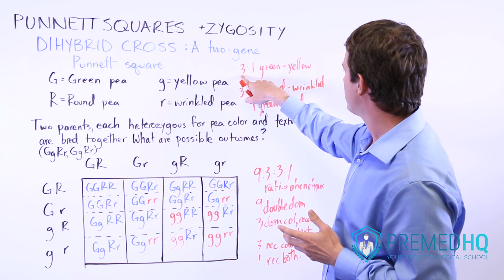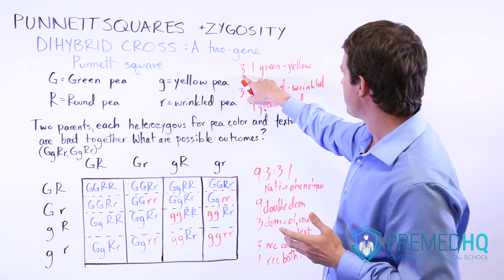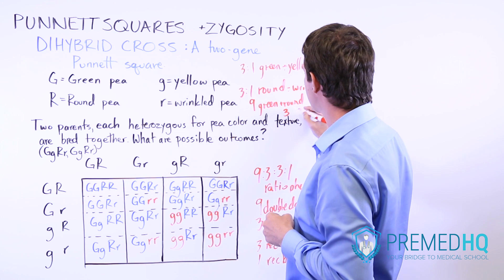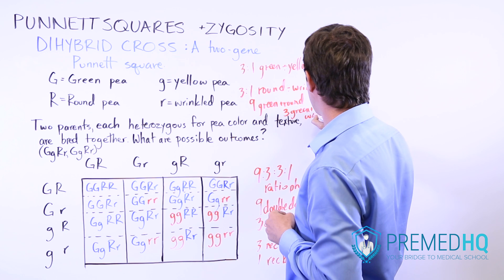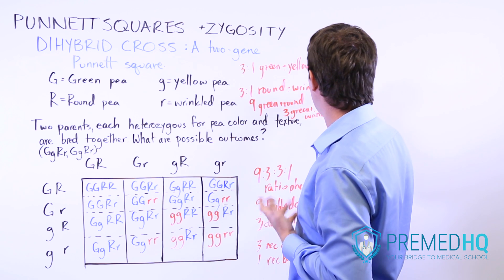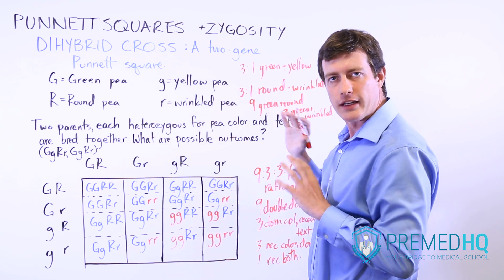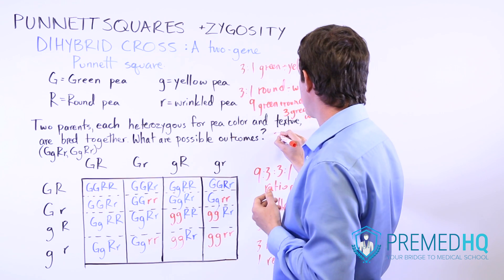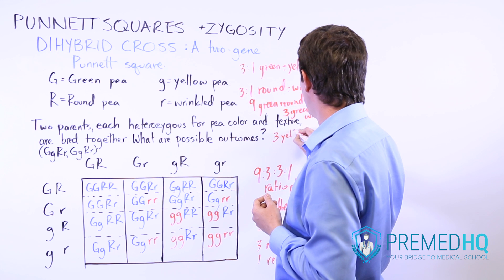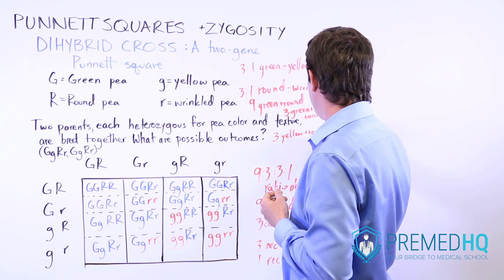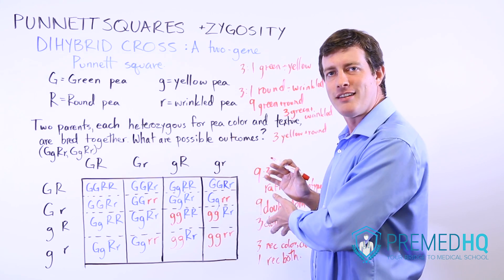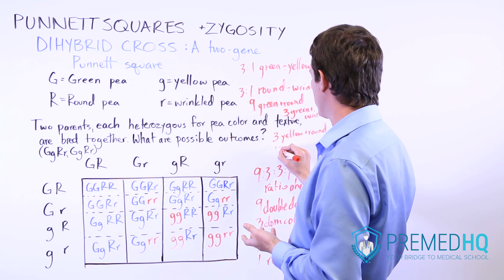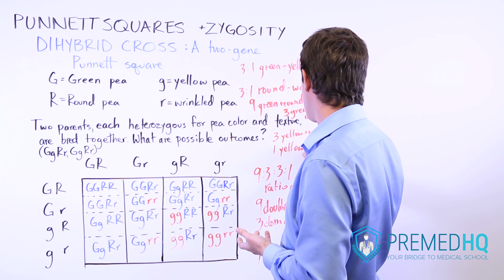For green and wrinkled: there's a three-to-one chance of being green, but only a one-in-four chance of being wrinkled, so it's three times one — three green and wrinkled. For yellow and round: it's one chance of being yellow times three chances of being round — still three that are yellow and round. Those have one dominant type and one recessive type. And then there's one shot at being yellow and one shot at being wrinkled — so one yellow and wrinkled.